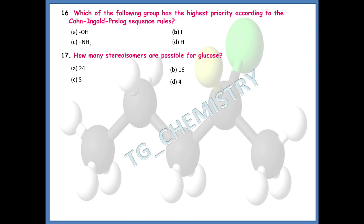How many stereoisomers are possible for glucose? The molecular formula of glucose is C6H12O6. To find the answer, we count how many stereocenters exist in the structure, and from that determine the number of stereoisomers. The right answer is option B — 16 stereoisomers are possible for glucose.